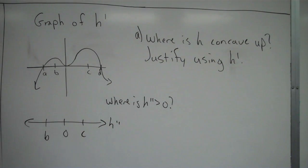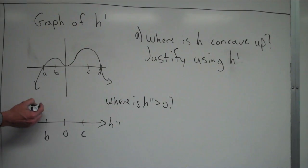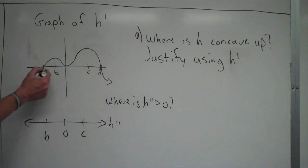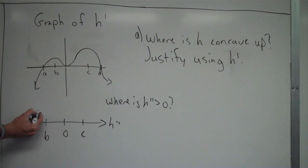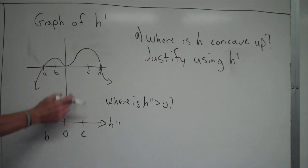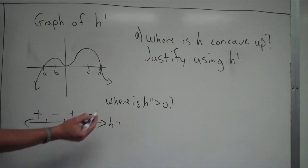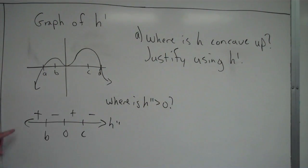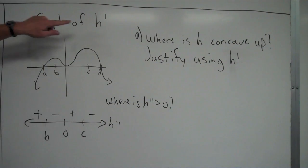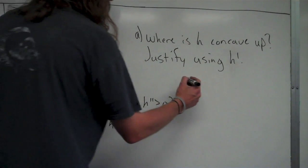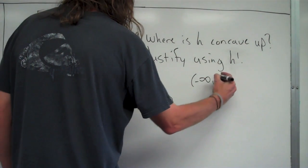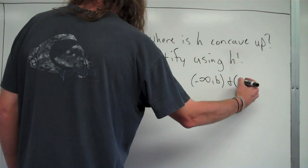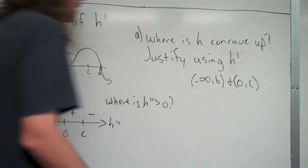When filling in the intervals in between, since H double prime is the slope of H prime, I look at what the slope is. To the left of B, the slope is positive. Between B and zero, the slope is negative. Between zero and C, the slope is positive. From C on, the slope is negative. So H is concave up where H double prime is greater than zero, which is from negative infinity to B and from zero to C.